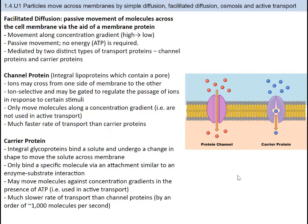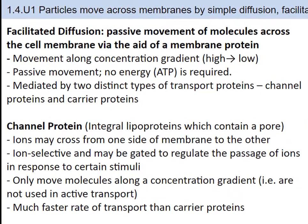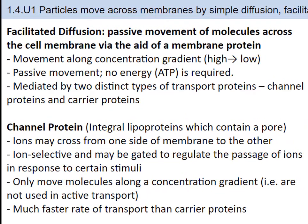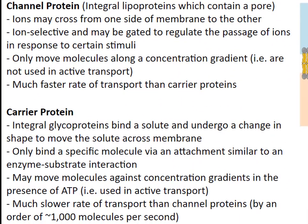Facilitated diffusion is also a type of passive transport. This type of diffusion is the movement of molecules from higher to lower concentration through a channel or carrier protein without the input of energy. Channel and carrier proteins have similar functions; however, channel proteins enable a much faster movement of molecules across the cell membrane and are only used in passive transport. Carrier proteins have slower movement and might be used during active transport, and they require substances to bind to the protein, which also makes transport slower.